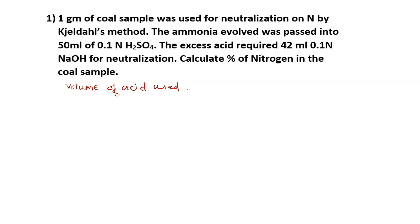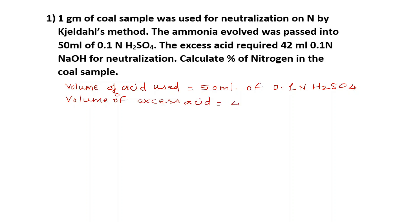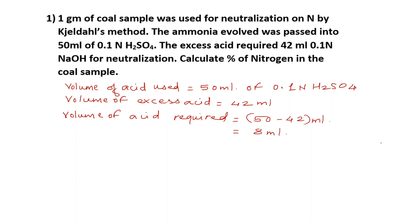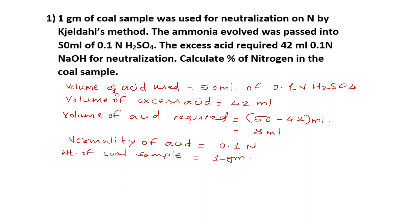Here the data are given. Volume of acid used is 50 ml of 0.1 normal H₂SO₄. Volume of excess acid is 42 ml. So volume of acid required is 50 minus 42 ml, which is 8 ml. Normality of acid is 0.1 normal. Weight of coal sample is 1 gram.